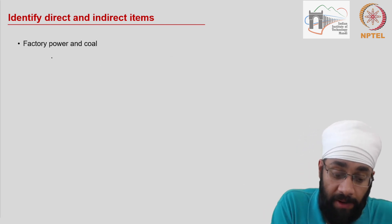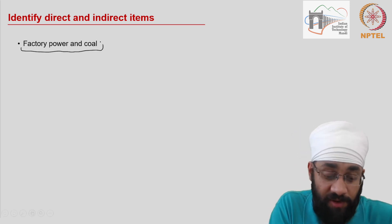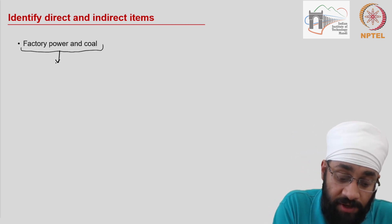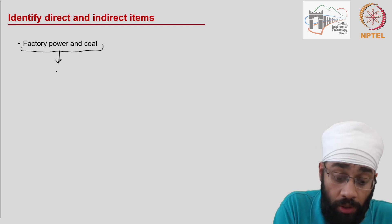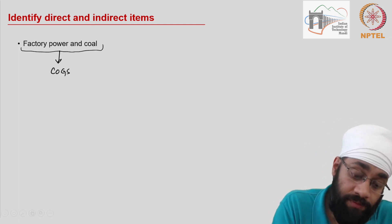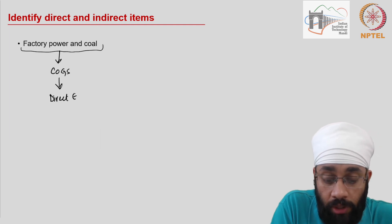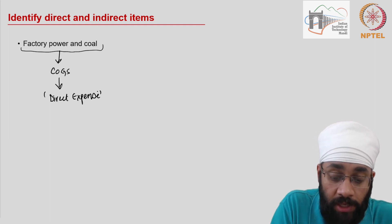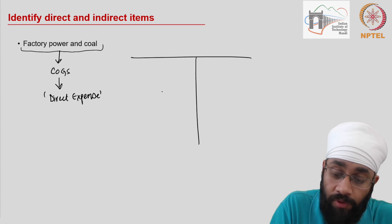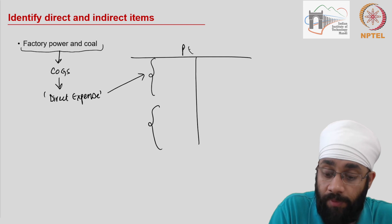The next item is factory power and coal. Whenever an expense is related to the factory, it is contributing to the cost of the goods we want to sell during the year. Factory power and coal directly contribute to the cost of the product being manufactured, so this is shown in the first half of the profit and loss account as a direct expense.